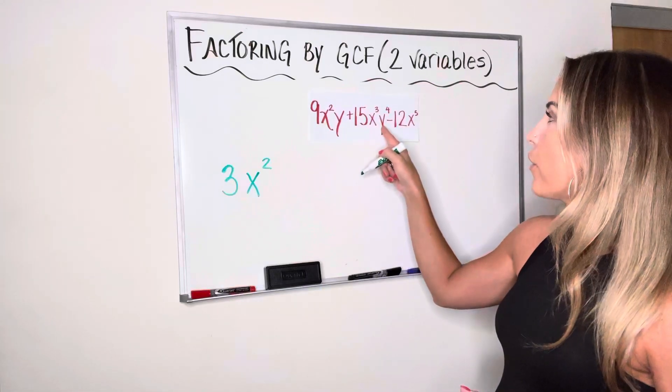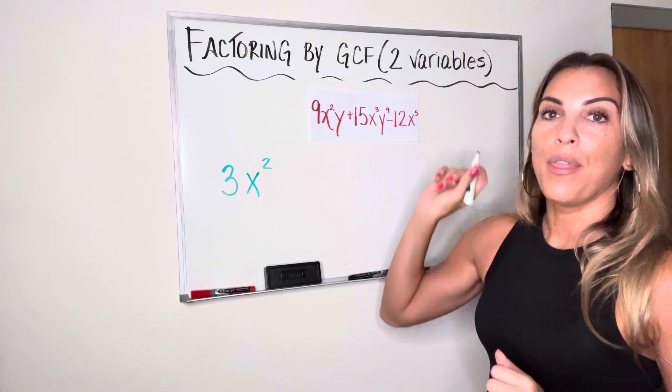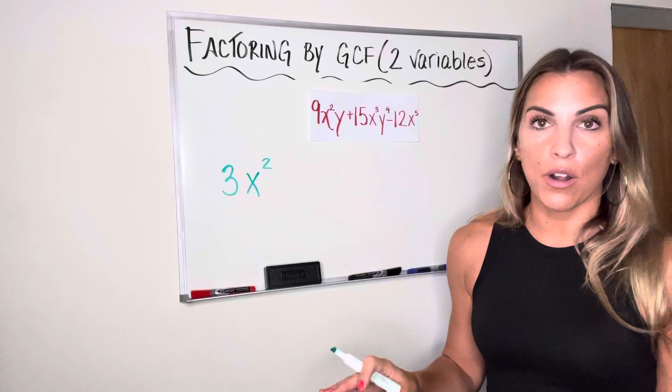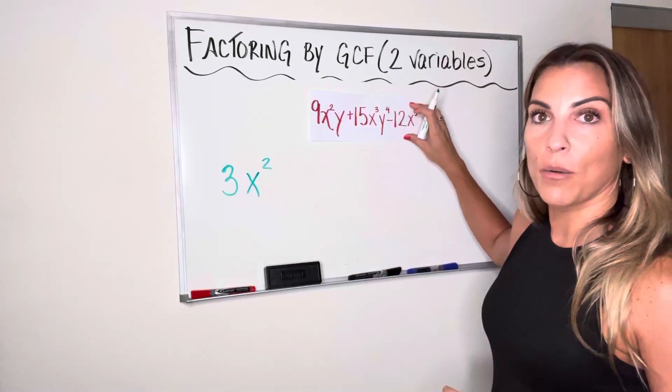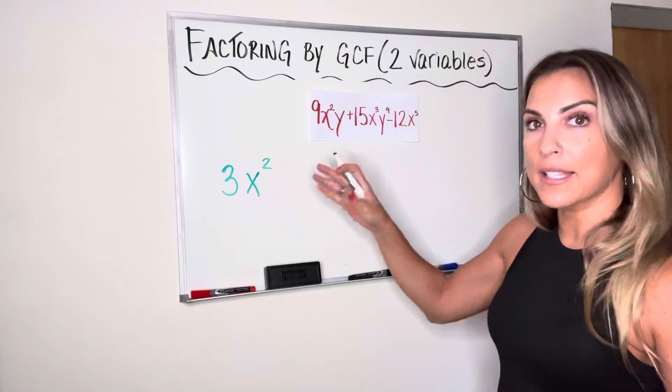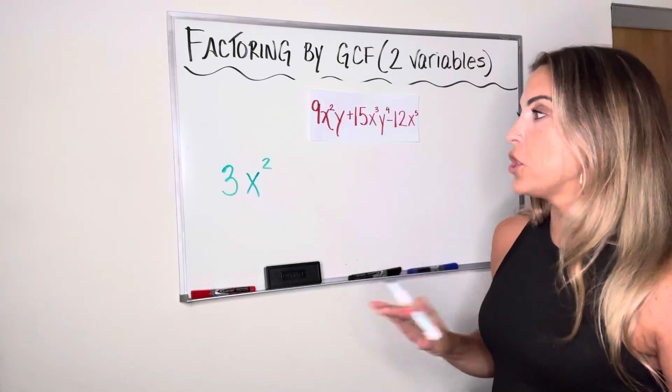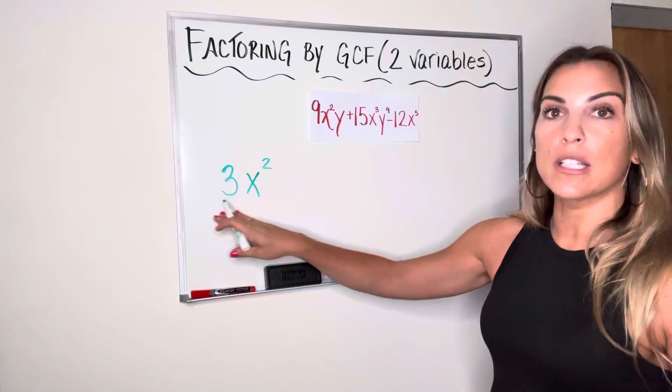I have a y, a y to the fourth, and no y. That means y cannot be part of the greatest common factor because it is not a factor of the last term. It's not common, right? It has to exist in all the terms. So my GCF in this expression is just 3x squared.